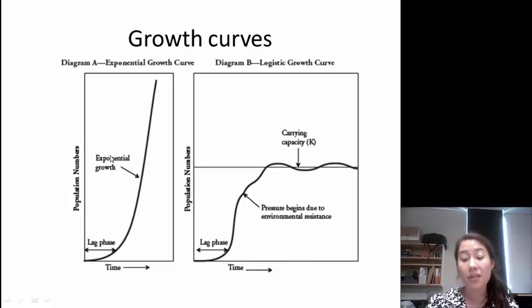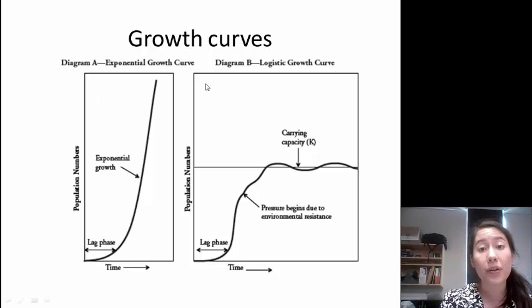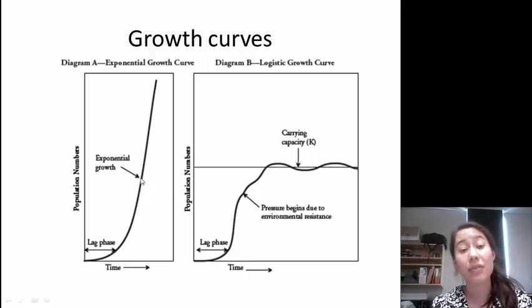I'm going to move on to model 3 right now, which are the growth curves. In the growth curves, we can see that there are two types: an exponential growth curve and a logistic growth curve. The first thing that I want to point out is that the axes are the same. Time is on the x-axis in both of them, and population number is on the y-axis in both of them. If we look at the beginning of the curve, it's exactly the same in both graphs. We have a lag phase that then rises. The difference is really what happens in the second half of the graph.